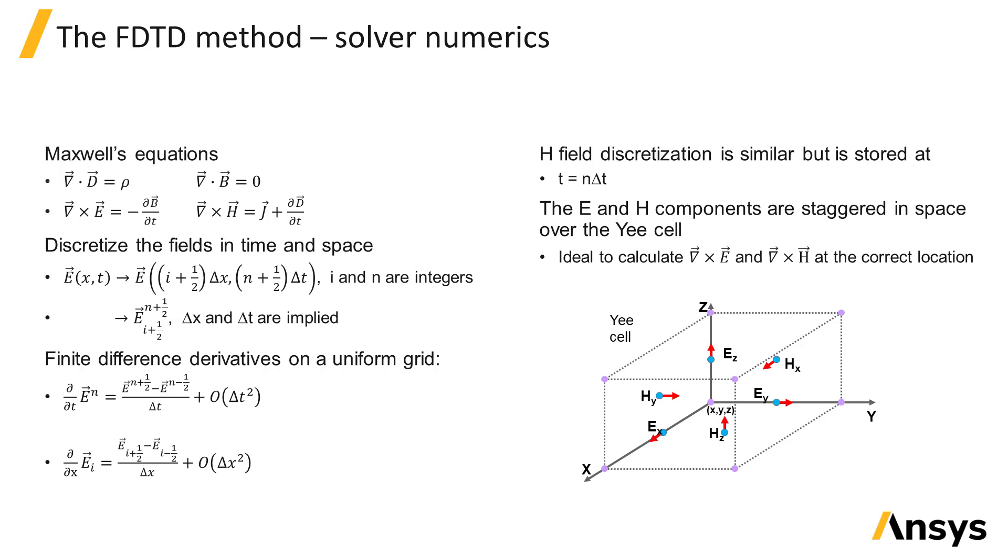The equations are solved numerically on a discrete grid in both space and time. This means that the electric and magnetic fields E and H respectively are discrete in space and time. The grid step in space is generally called delta X or delta Y or delta Z and in time it is called delta T.